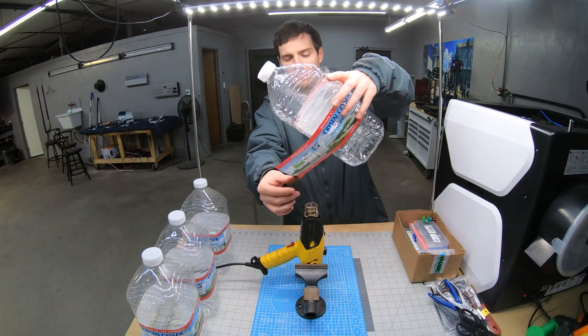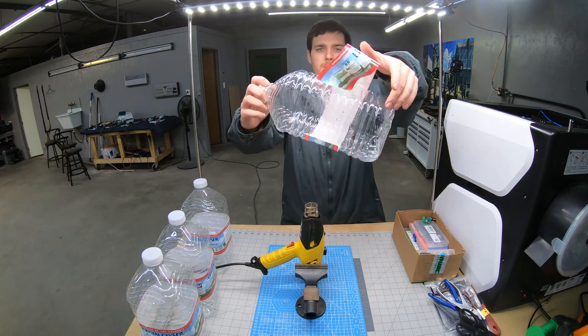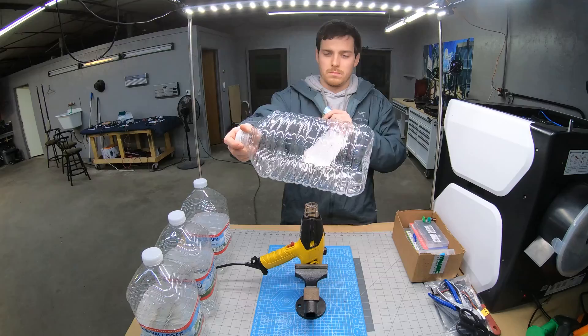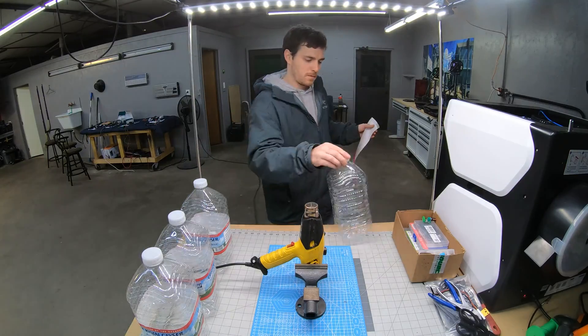Now that you have a bottle cutter and a bottle, you need to prepare the bottle so you can turn it into cordage. To do that, you'll need a heat gun. Start by removing the label. You can remove it easier with the heat gun. Just make sure you don't burn through the label.